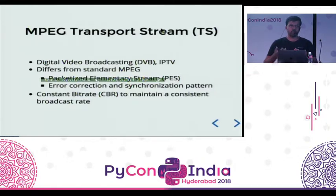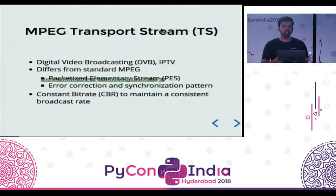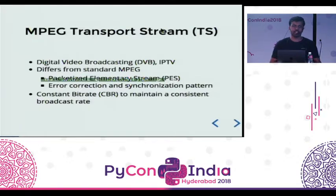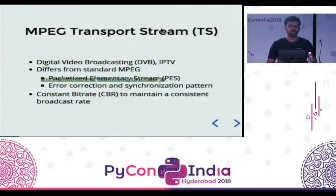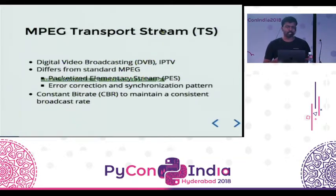When playing from a CD or any such media, we do not need to care about whether there are going to be losses, because if there are losses, we'll just get a new CD. But for networks, we always need to take care about losses and packet drops. There is error correction and synchronization because MPEG Transport Stream is also capable of live streaming. So when we lose track of where we are, we need to know from where to begin — that is where a synchronization pattern is needed. Currently, this is used in webcams and IPTVs.